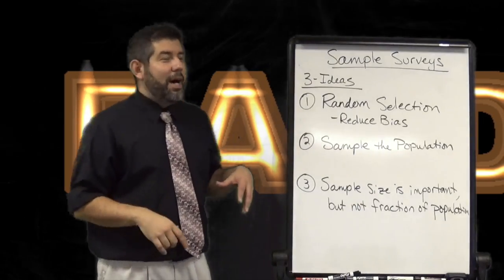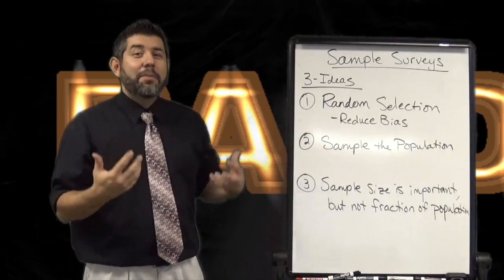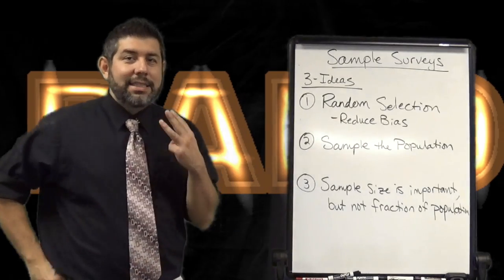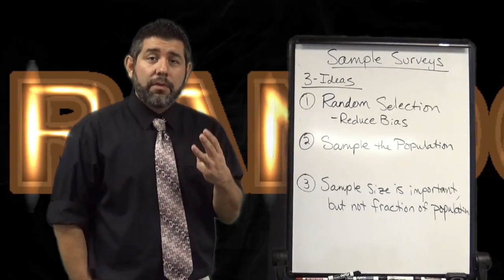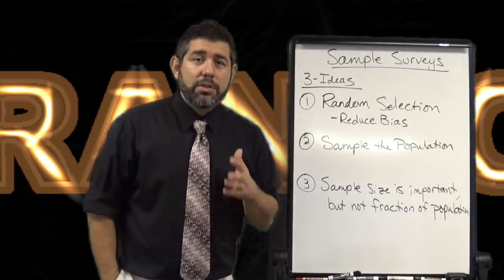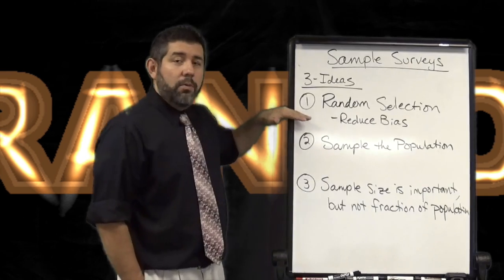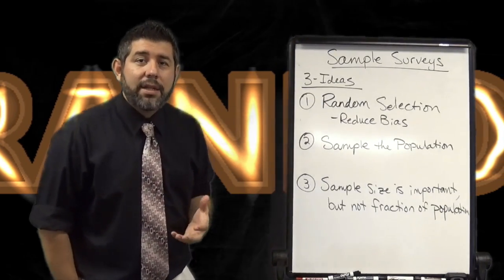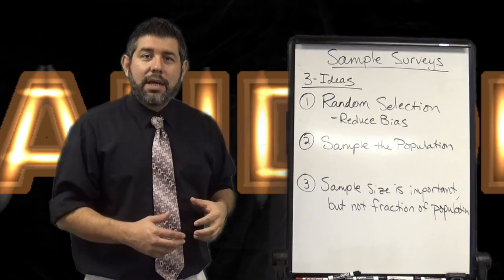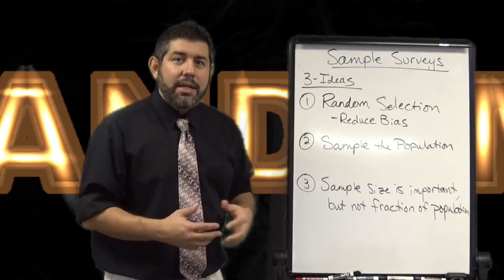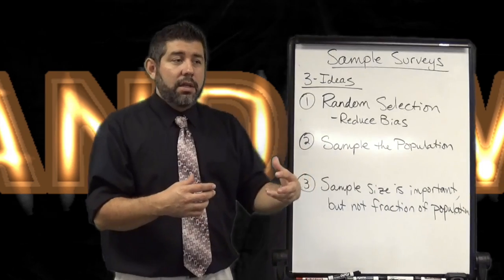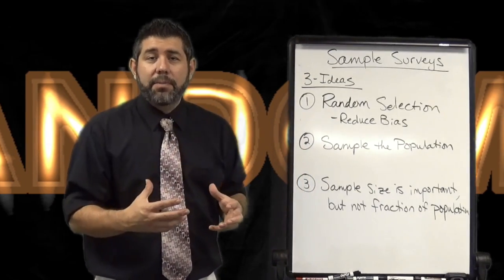Now that we're going to take a look at some of that pie, let's talk about sample surveys and how the idea of pie is going to help me explain what we do when we deal with sample surveys. We have three ideas to keep in mind when we want to take a really good sample survey and make sure we have usable data. The first thing is we want to randomly select our participants. What randomization does is it allows us to reduce the amount of bias that we have in our sample survey.